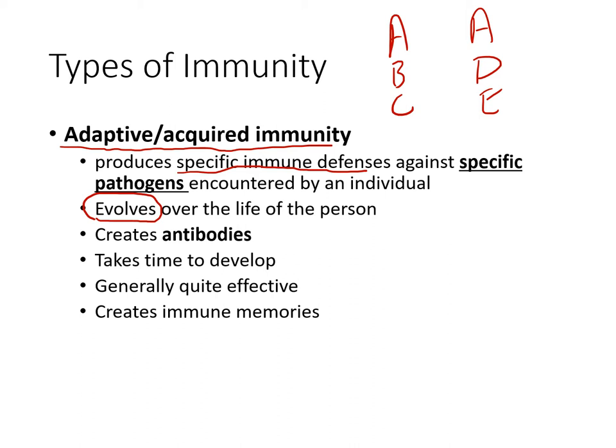Since you haven't been exposed to certain pathogens, you won't have protection against them. Everybody is going to have a slightly different adaptive immunity, depending on what pathogens they've encountered. This continues to evolve over time — every time you get sick you add a new disease to your adaptive immunity. Later in life you may contract additional diseases, expanding that protection.